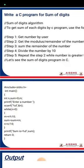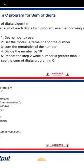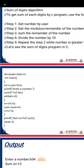So these are the basic five steps. First, take the number from the user, then calculate the remainder, then sum of remainder, then divide the number by 10, and then repeat the step until the value is greater than 0. This is the sum of digits logic or algorithm.